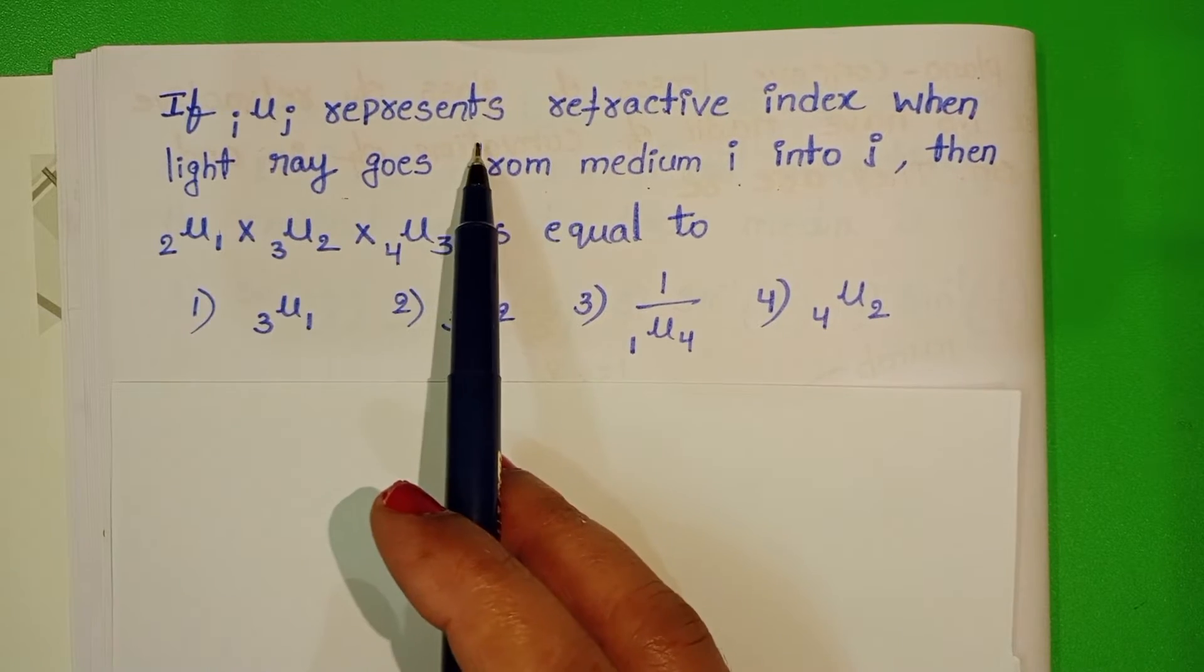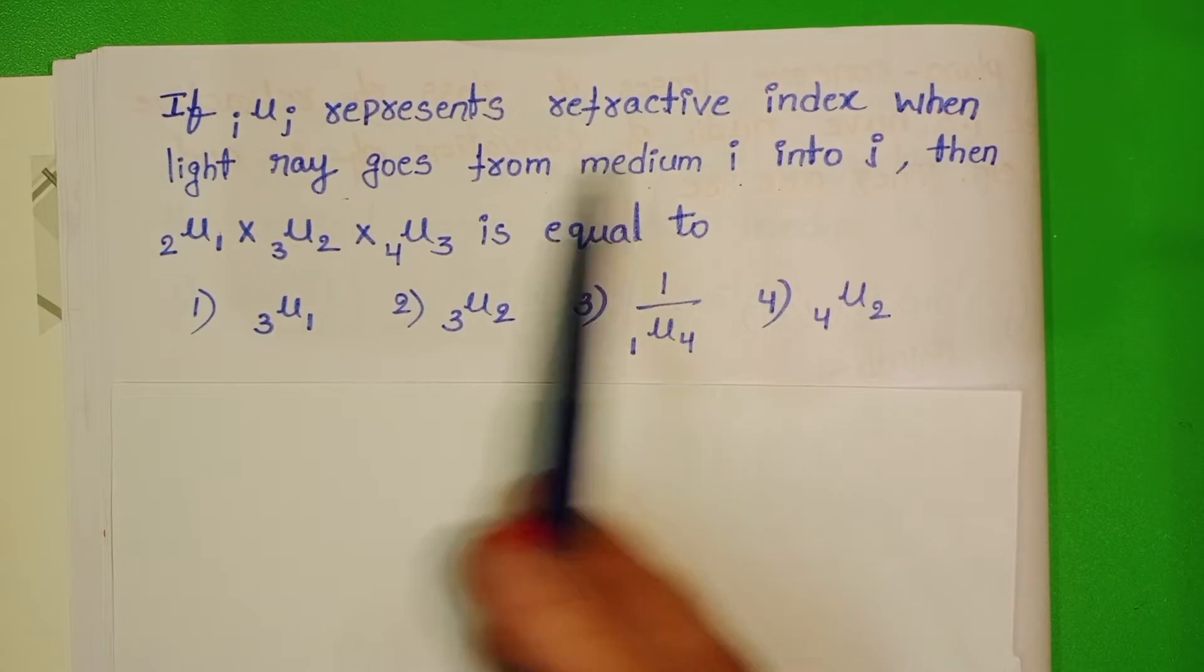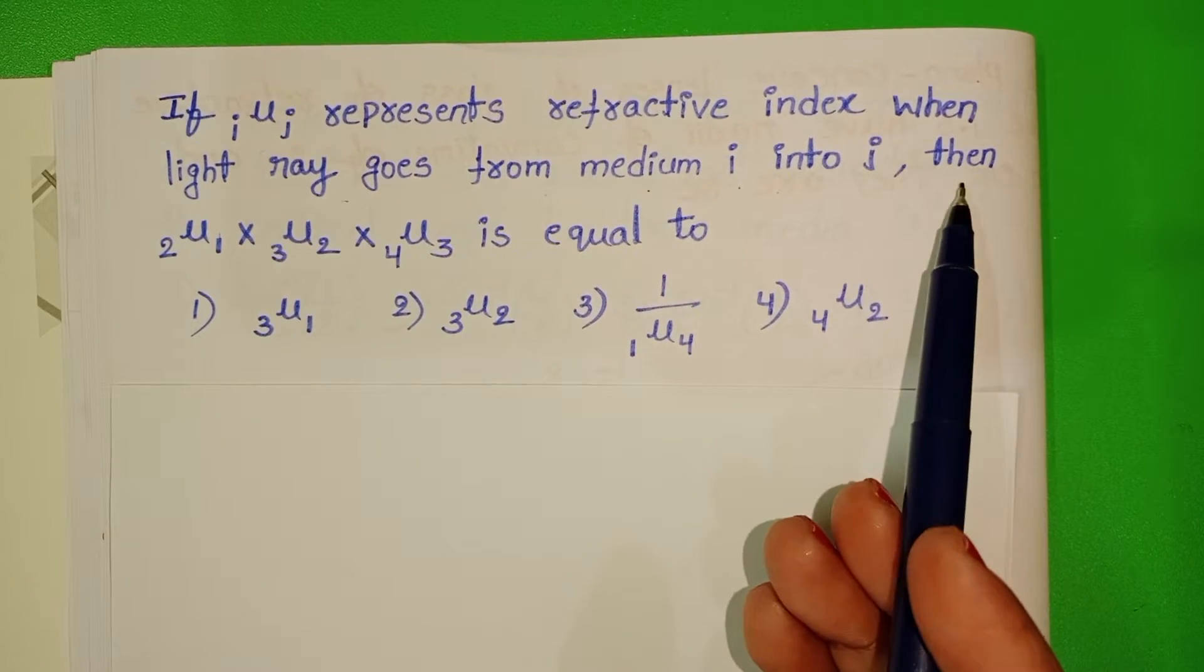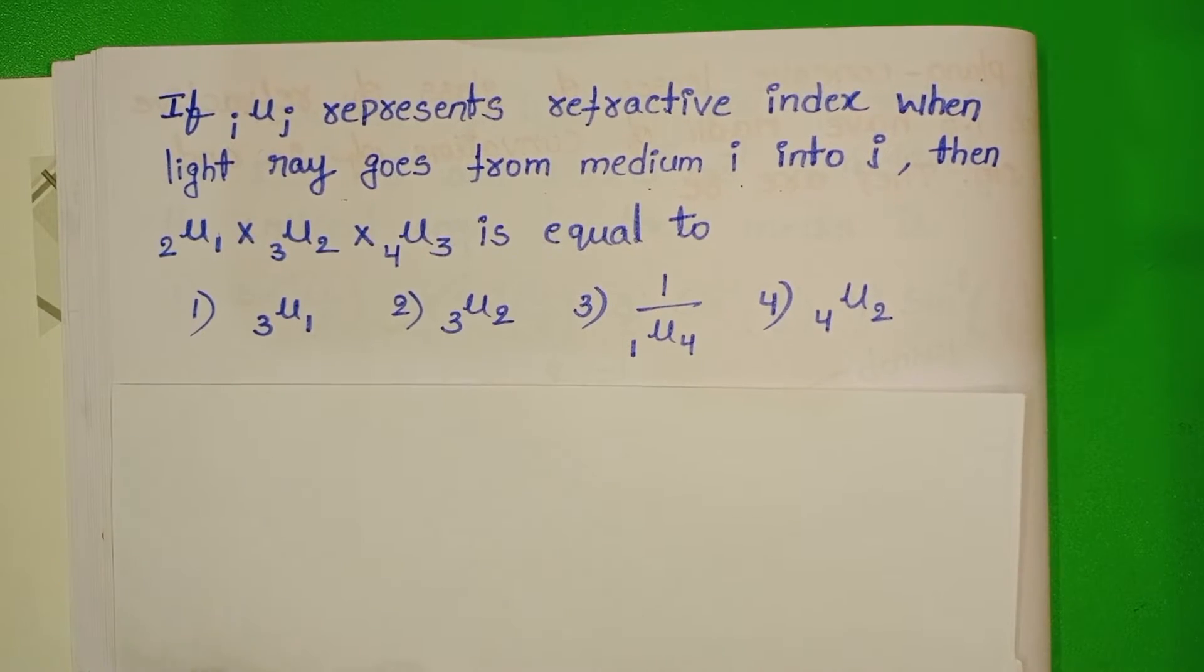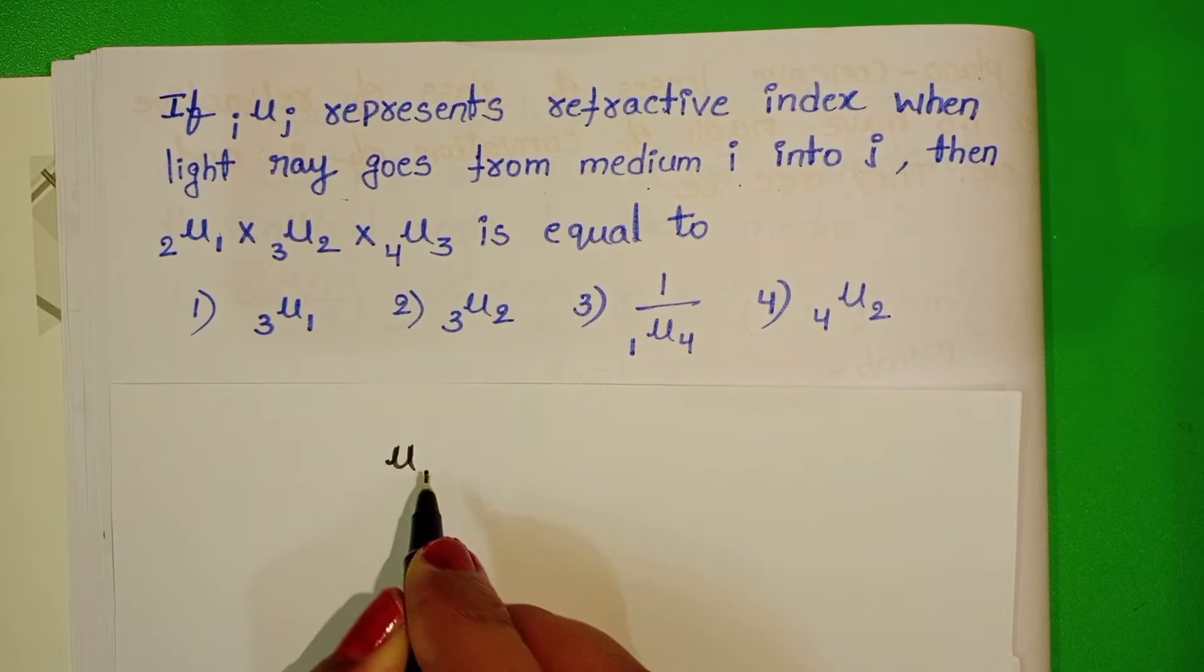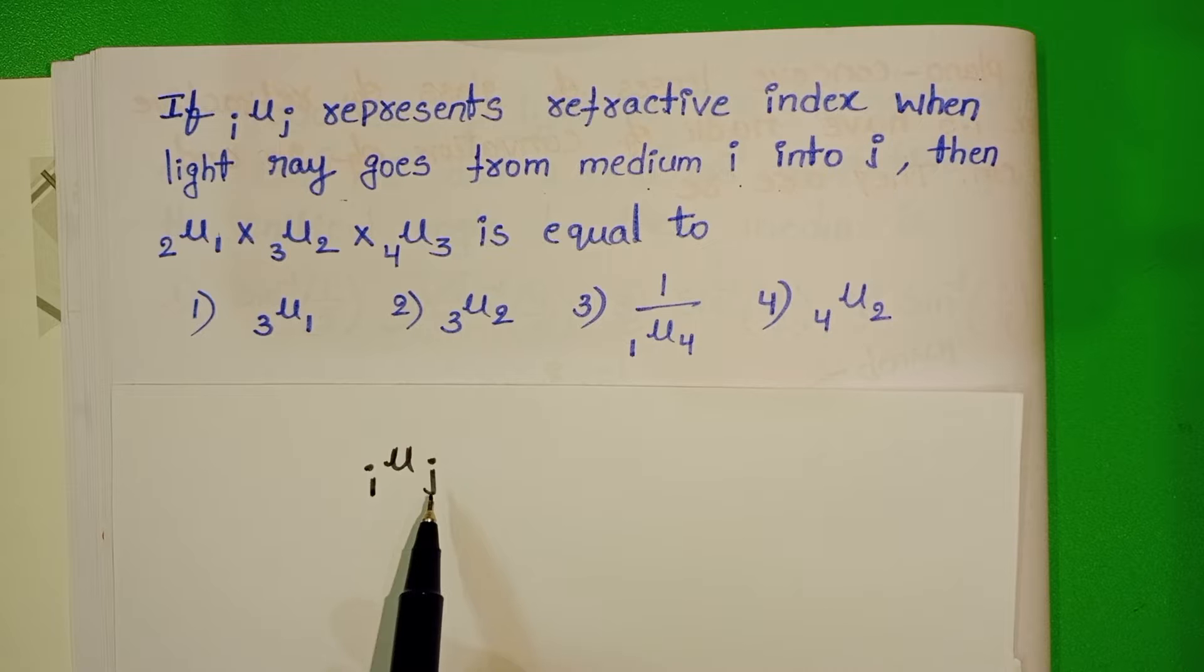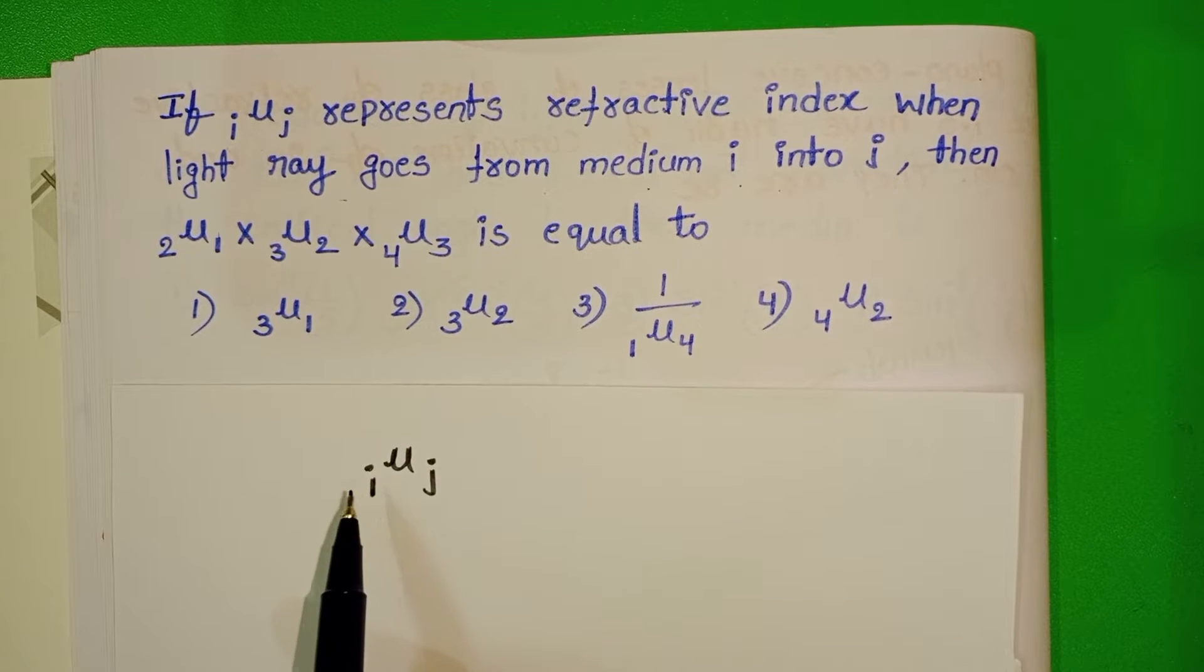If mu ji represents refractive index when light ray goes from medium i into j, then this is equal to the given mu ji refractive index of j medium to the i medium.